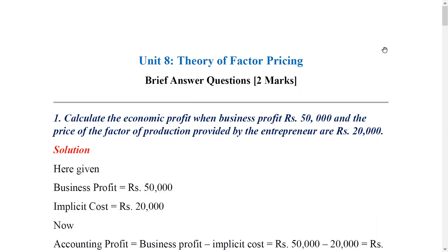The first question is to calculate the economic profit when business profit is 50,000 and the price of factors of production provided by the entrepreneur is 20,000. We will talk about the important concept of economic profit and business profit — accounting profit and economic profit. We are generally concerned with economic profit.